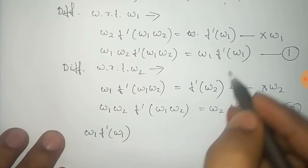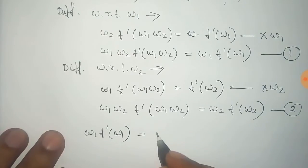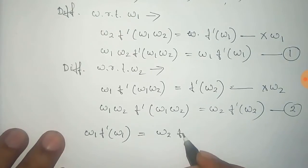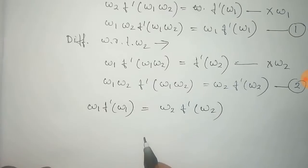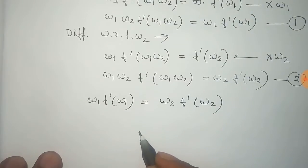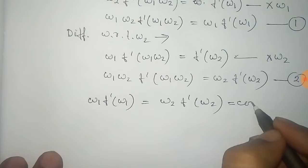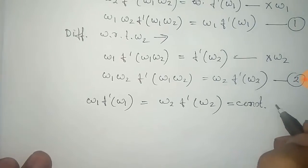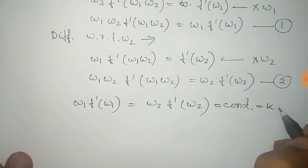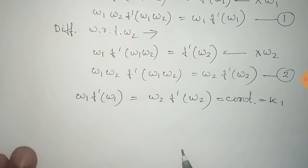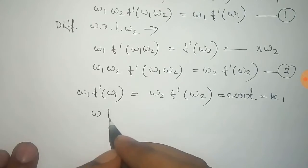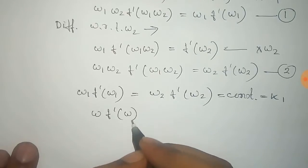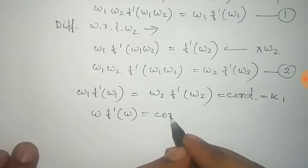Equating the right-hand sides of equations 1 and 2, we can see that this term is a constant, which we call k1. For any arbitrary probability Omega, we can say that Omega · f'(Omega) equals k1, because this is a constant.